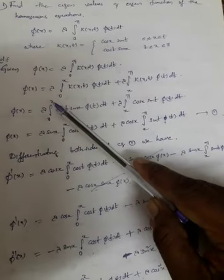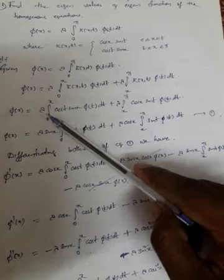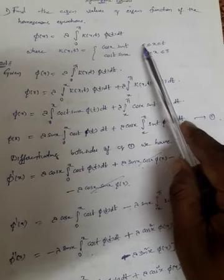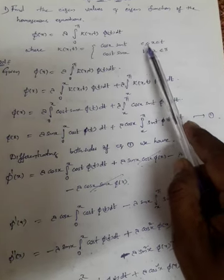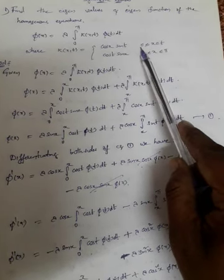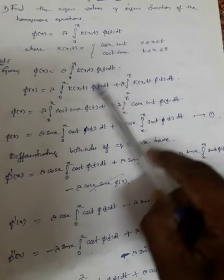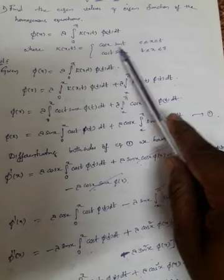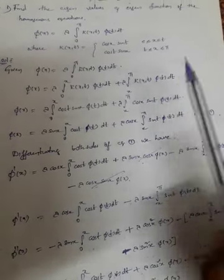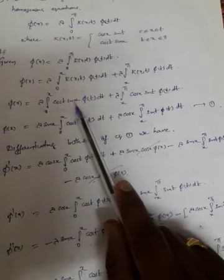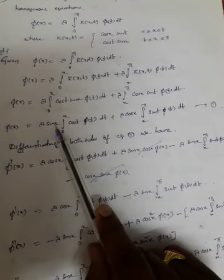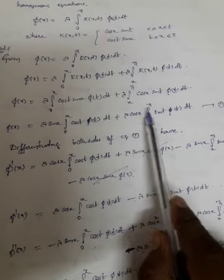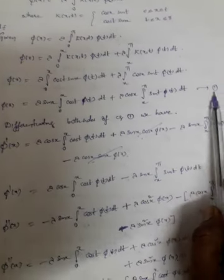From 0 to x, the kernel is cos(t)sin(x), since t ≤ x in that interval. From x to pi, the kernel is cos(x)sin(t). So we get: phi(x) = lambda sin(x) integral from 0 to x of cos(t) phi(t) dt, plus lambda cos(x) integral from x to pi of sin(t) phi(t) dt. This is equation 1.